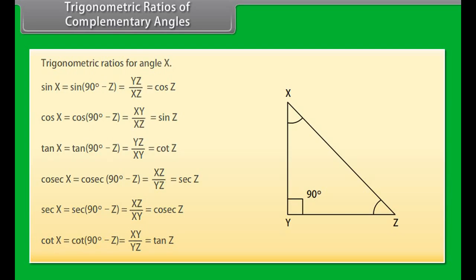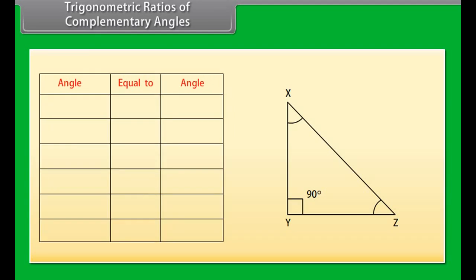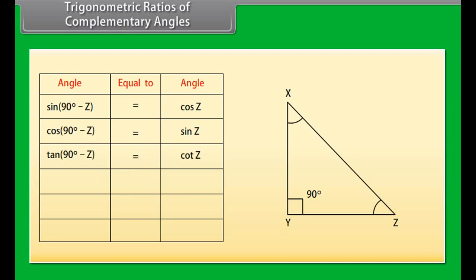Let us compile our observations: sin(90° − Z) = cos Z, cos(90° − Z) = sin Z, tan(90° − Z) = cot Z, cosec(90° − Z) = sec Z, sec(90° − Z) = cosec Z, cot(90° − Z) = tan Z.